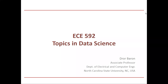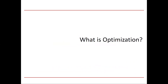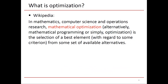Welcome to module number 20. In the previous module number 19, we finished covering the scientific programming material, and now we're going to start talking about optimization for a few modules. What is optimization? Wikipedia states that in mathematics, computer science, and operations research, mathematical optimization — alternatively mathematical programming, or simply optimization — is the selection of the best element with regard to some criterion from some set of available alternatives. So we want to find the best under some criterion.